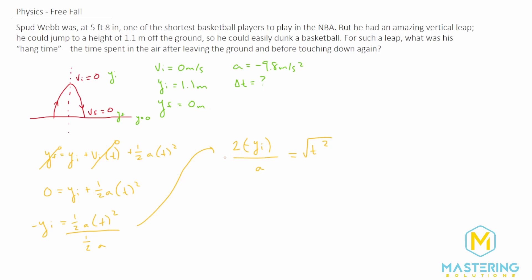We want to take the square root of both sides. So t equals the square root of two times negative y initial divided by the acceleration. So let's come up here to the top to give us some more space. So t equals the square root of two times the negative y initial, which we said was 1.1 meters, divided by the acceleration, which we said is negative 9.8 meters per second squared.